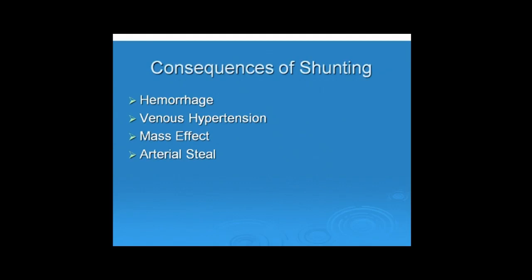So in the spine, the consequences of the AV shunting are either hemorrhage. So if there's an aneurysm or weakened vein, hemorrhage can occur. And that's seen with perimedullary fistula and AVMs. Venous hypertension is not uncommon with dural fistula. In fact, that is the method of presentation. So elevation of venous pressures leads to poor drainage of the spinal cord, leading to neurologic deficit. And sometimes there are tremendously enlarged vascular structures that can lead to mass effect in the limited space in the spinal canal. And arterial steal, maybe, you know, that's always discussed whether that actually occurs or not in the spinal cord.